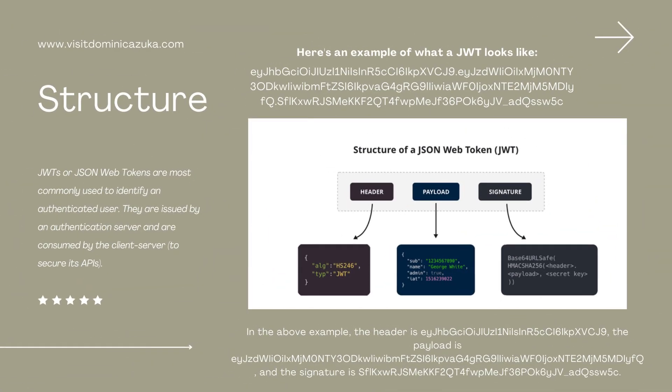We'll move on to talking about the structure of JSON Web Tokens. Here is an example of what a JWT looks like. This JWT, shown in the image, is separated by three periods into three sections: the header, the payload, and the signature.